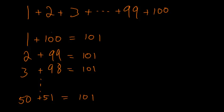So you can notice that you have the number 101, and you add it 50 times. In other words, you multiply it by 50. So in this case, our answer would be 5050.